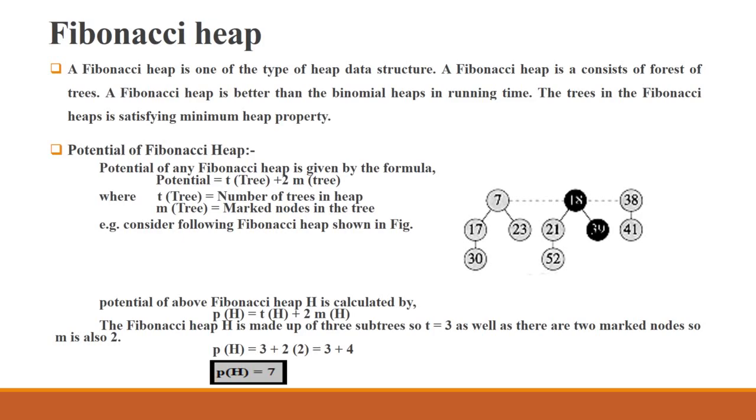So what is Fibonacci heap? A Fibonacci heap is one of the type of heap data structure. It is a consist of forest of trees and it is better than the binomial heap in running time. The trees in the Fibonacci heap satisfy minimum heap order property.